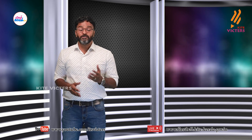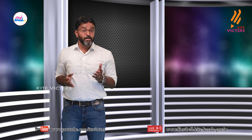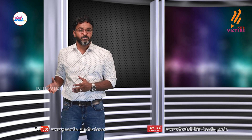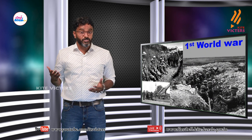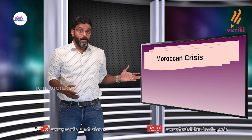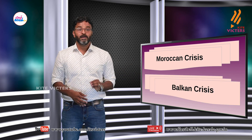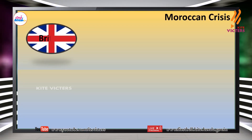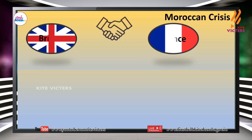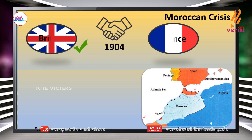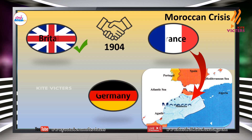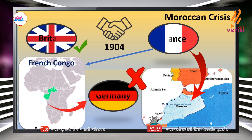This imperialist rivalry created several crises involving Germany, Britain and France, which was another factor leading to the First World War. The first was the Moroccan crisis — a secret treaty signed between Britain and France in 1904 in which Britain recognized France's claim over Morocco. Germany opposed this French claim over Morocco, and France agreed to transfer part of French Congo to Germany. Thus the problem was temporarily solved, though their rivalry continued.